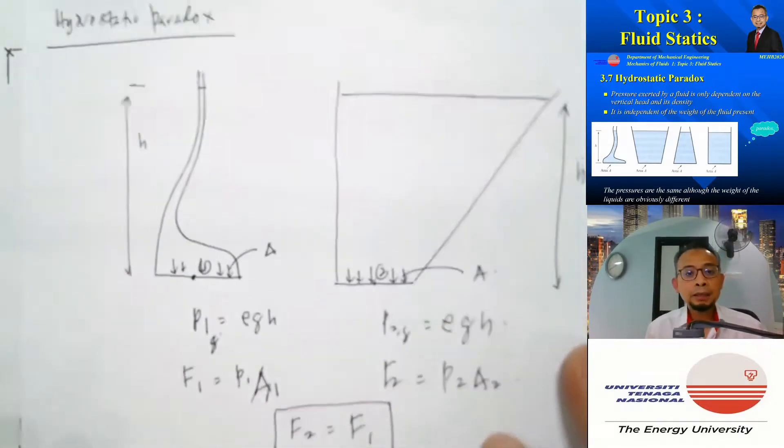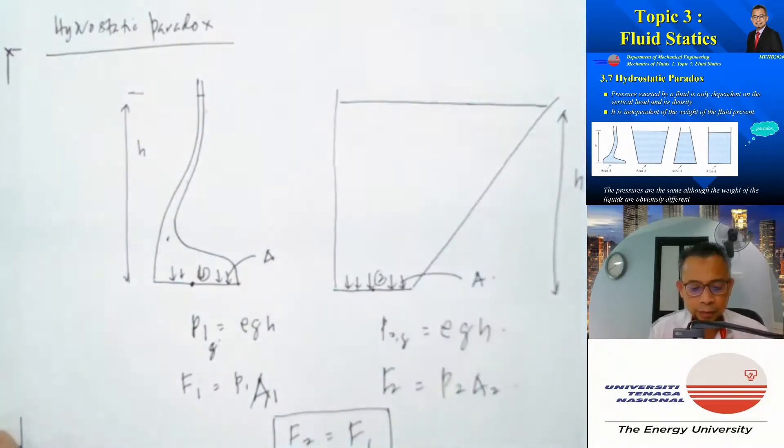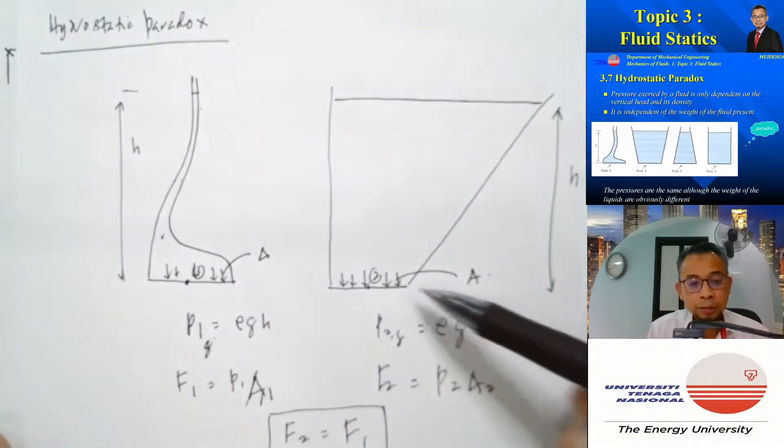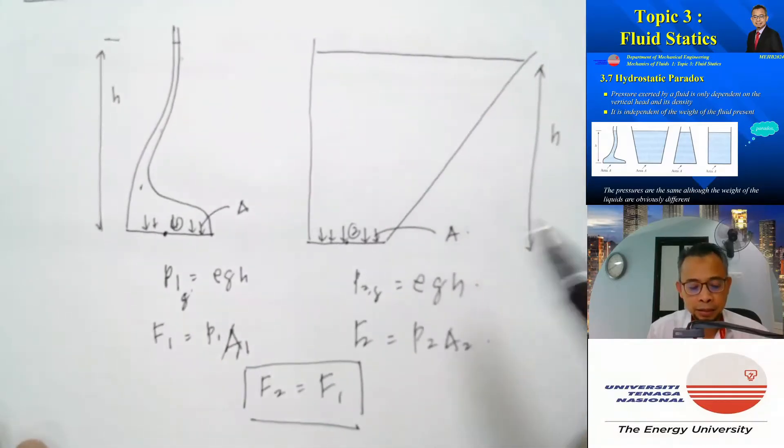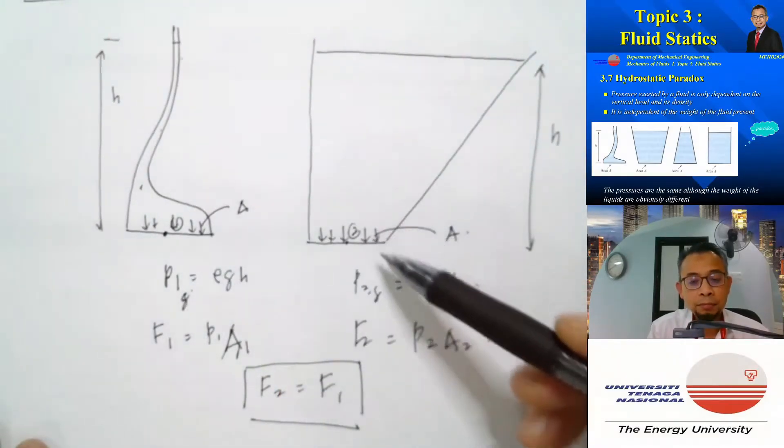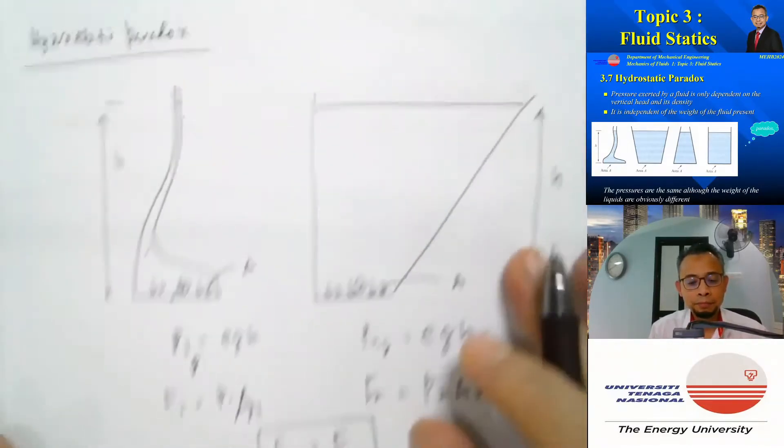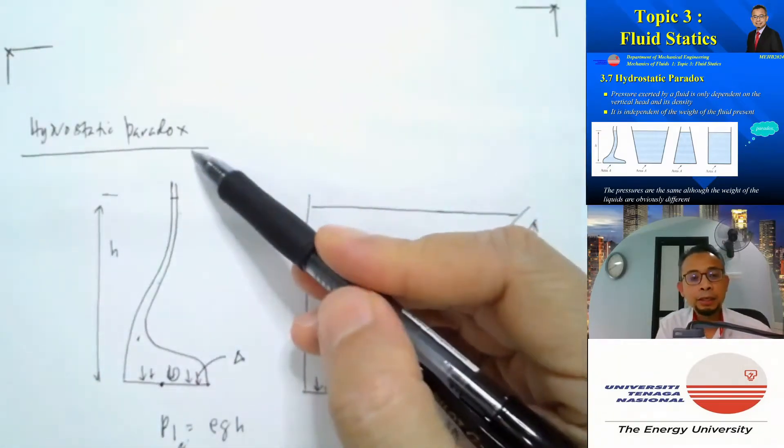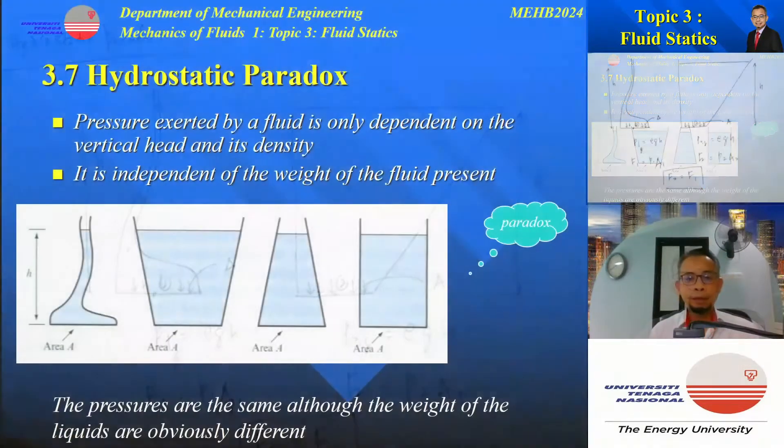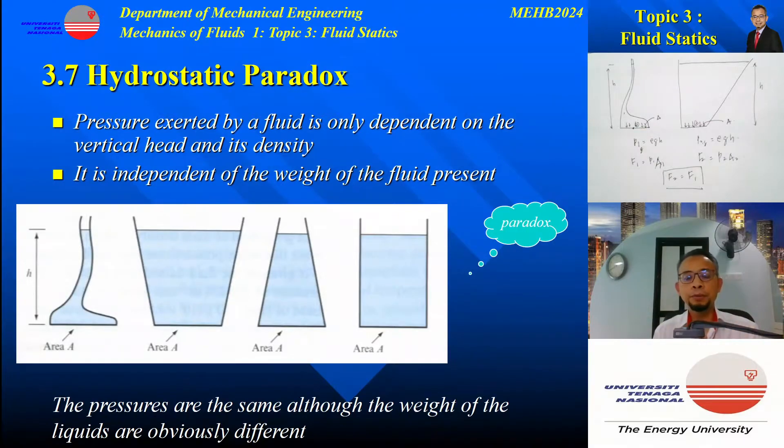So regardless of the volume of the fluid above the surface, the pressure at the bottom are the same, and hence the force at the bottom are the same. This is what we call hydrostatic paradox. Let us observe this short video related to hydrostatic paradox.